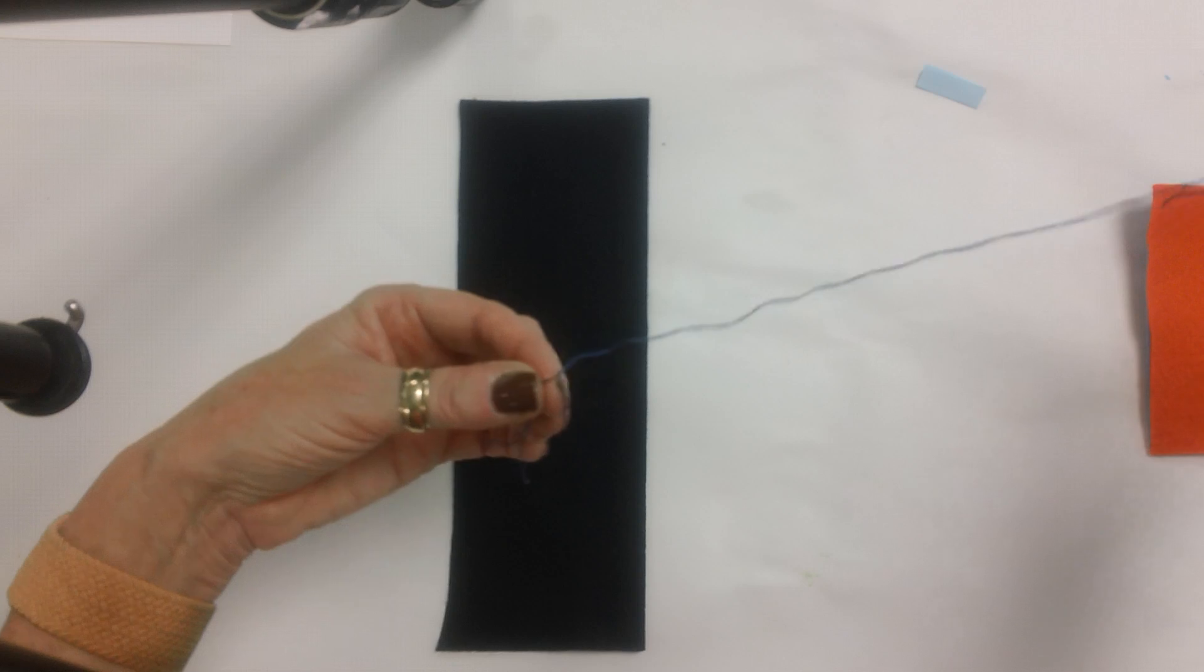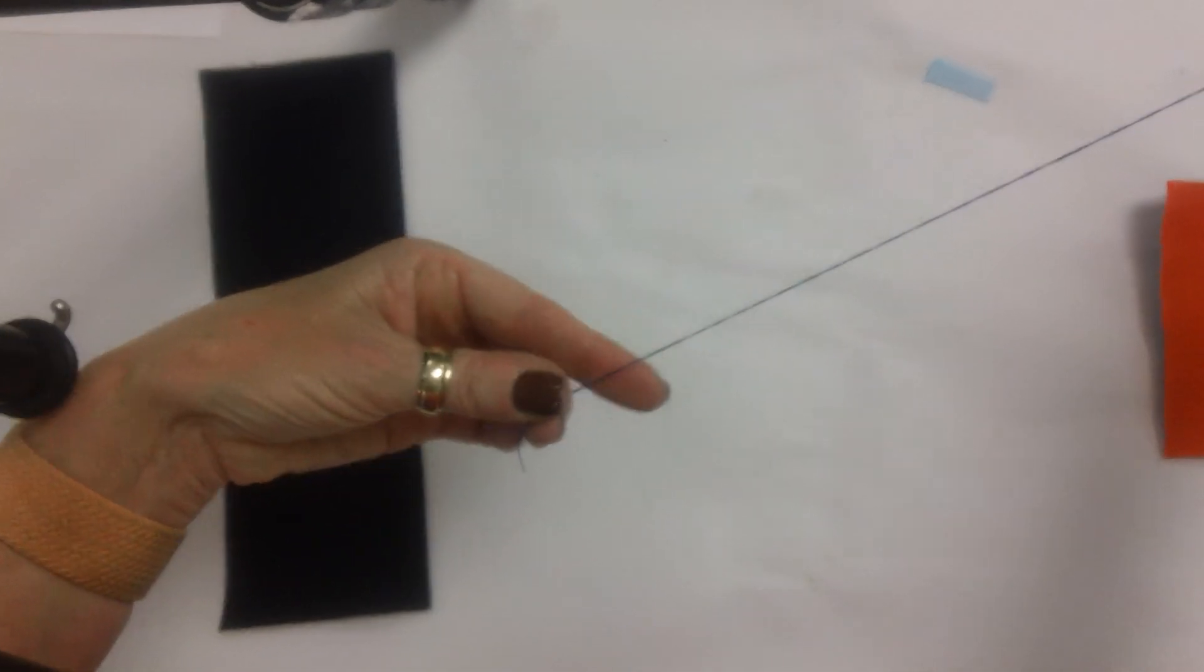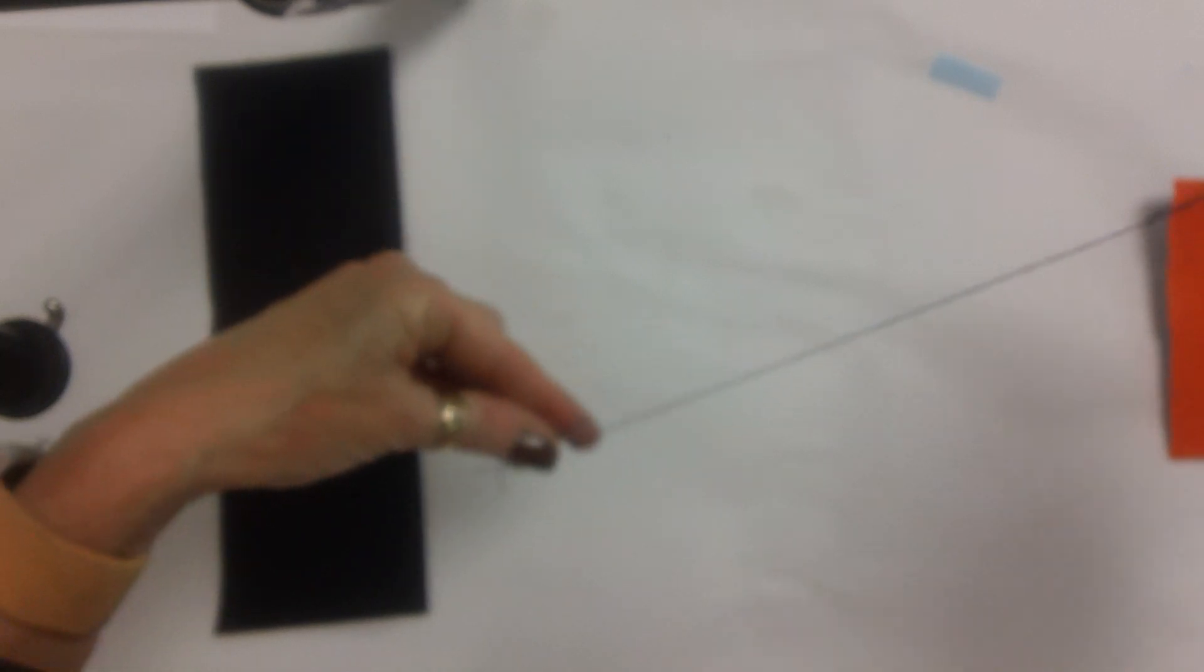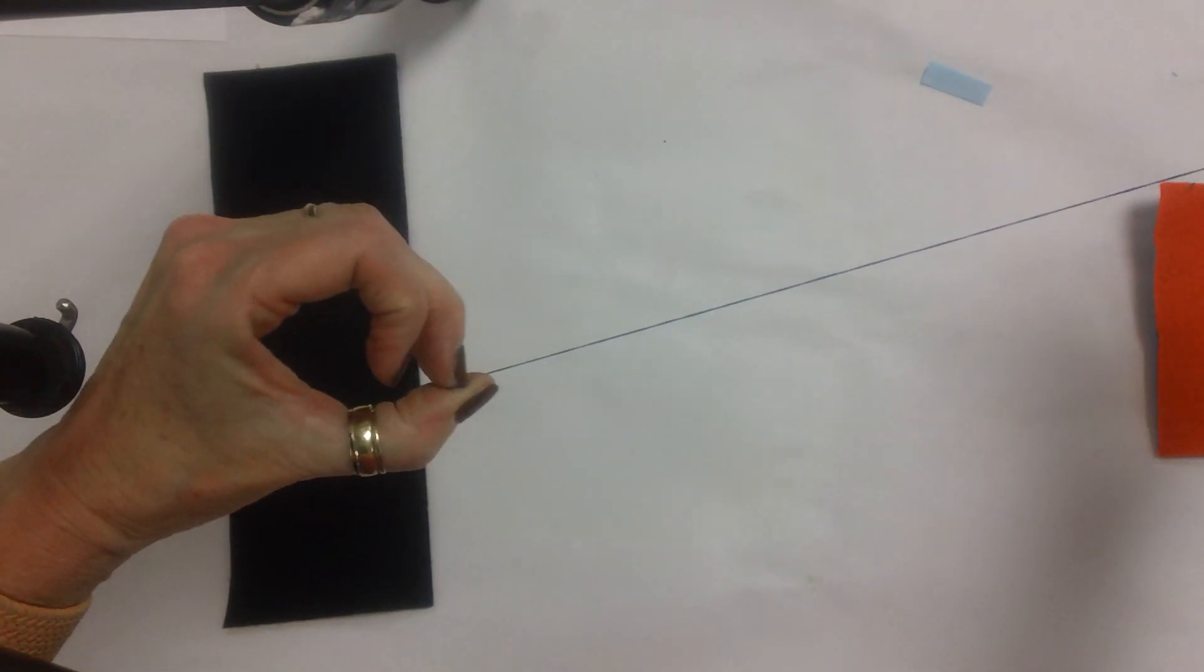Now to knot this, this is the second part that's kind of challenging. I learned this in Girl Scouts - you're going to wrap it around your finger, roll it between your fingers and then pull it.